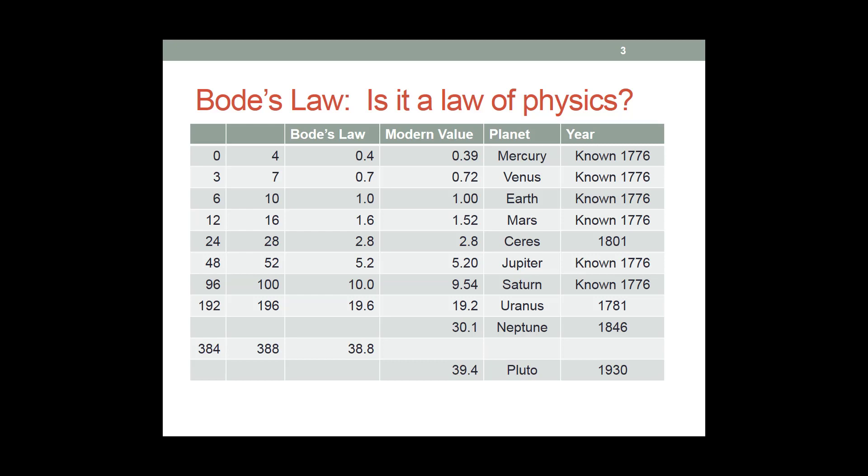Pluto, similarly, is at 39.4. It also is not predicted by Bode's law. So now, here's the question. Obviously, Bode's law just failed. We will agree that it is no longer a valid law. But was it ever a law of physics?